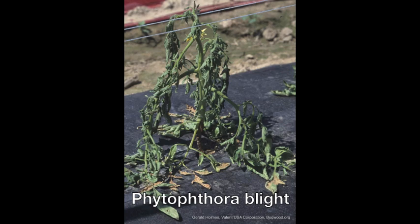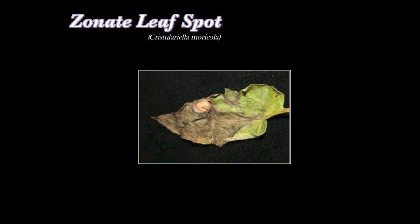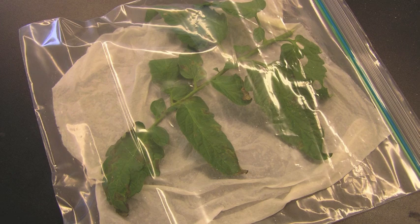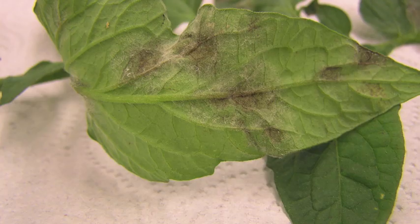Another imitator is zonate leaf spot. This infection only occurs on tomato and only affects the leaves, but symptoms are very similar to late blight. Put suspect leaves into a plastic bag or container with a moist paper towel — this will allow you to see if characteristic late blight sporulation appears.